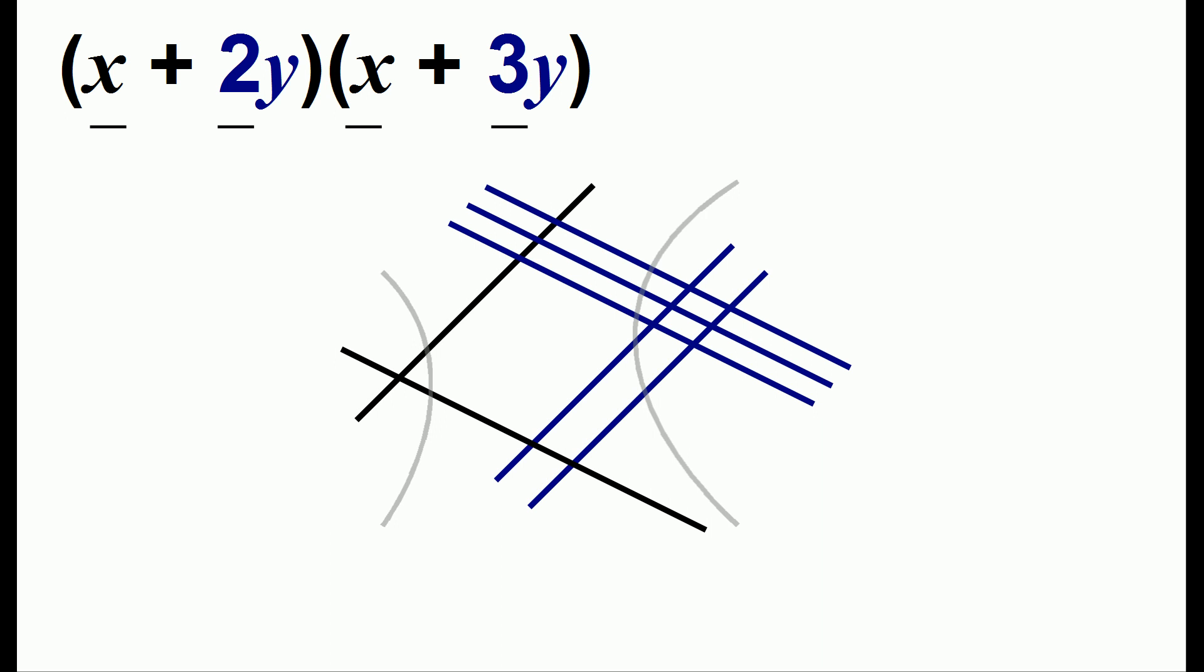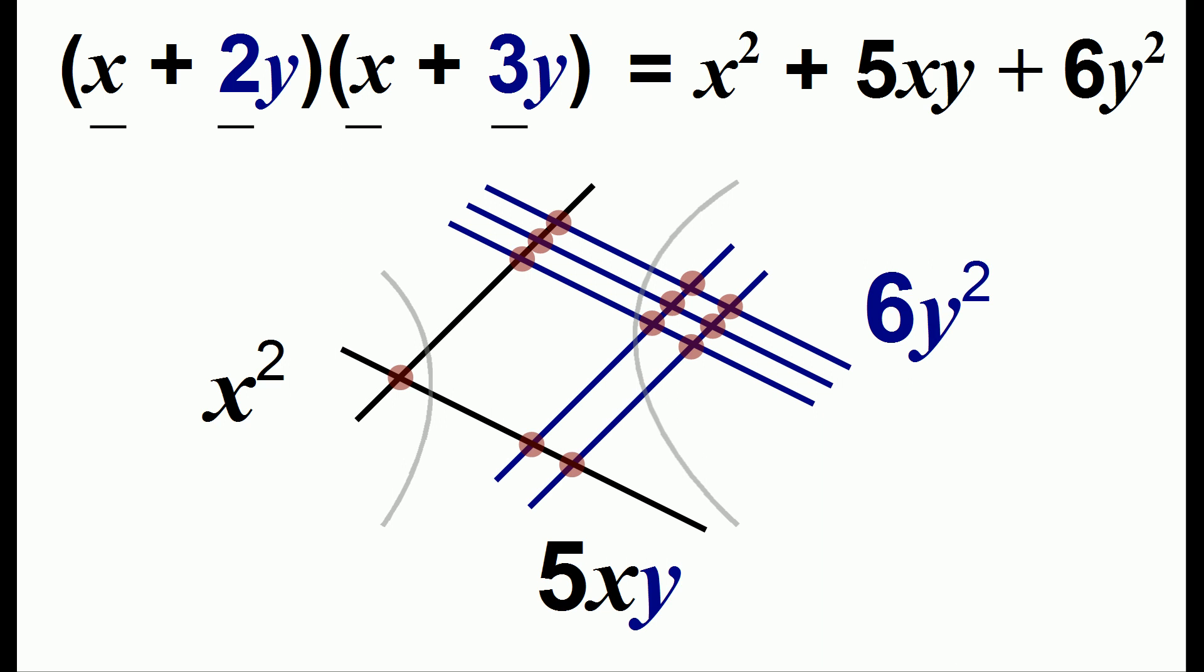And again, we make groupings. So here we have six dots. And because both of the lines are blue, that means it's 6y squared. In the middle, we have five dots. And these are the intersections of a black and blue line, which means it will be 5xy. On the end, we just have one dot. And that's for two black lines, so it's x squared. So that's the answer.